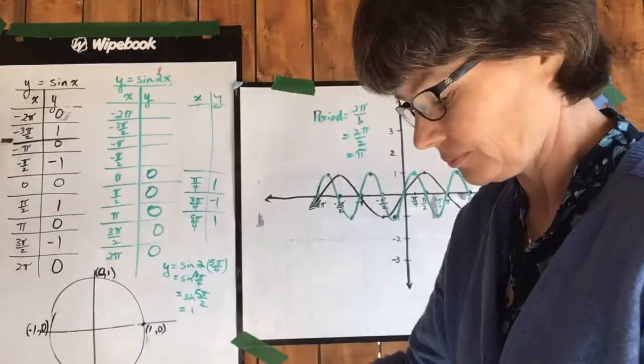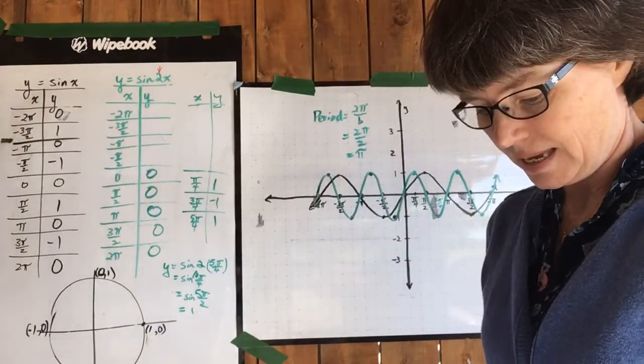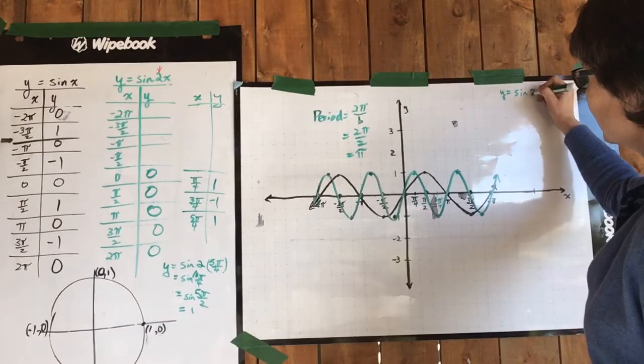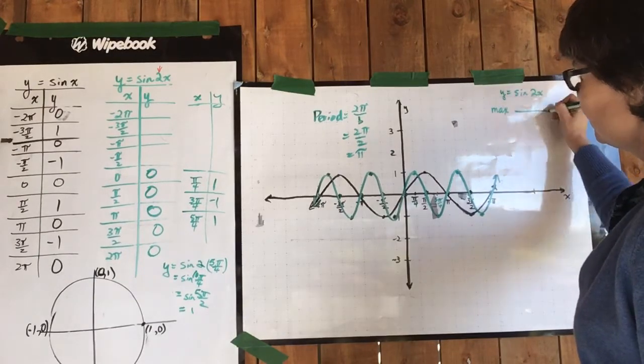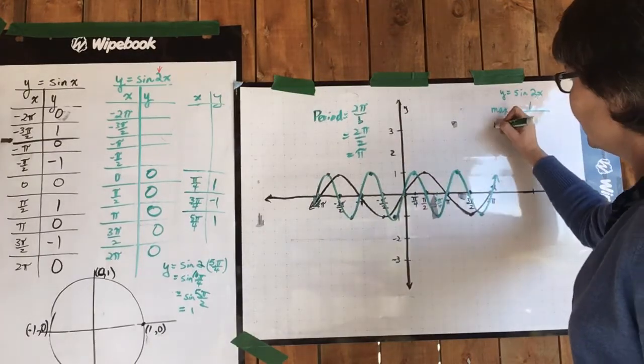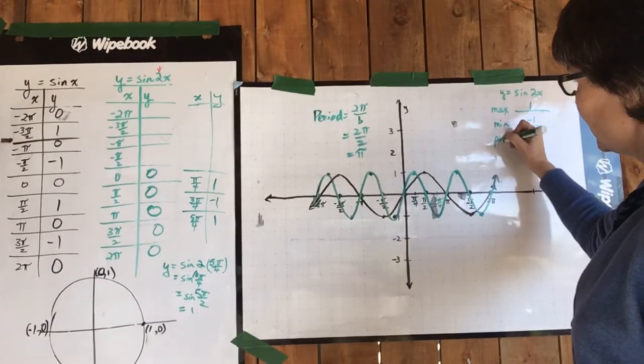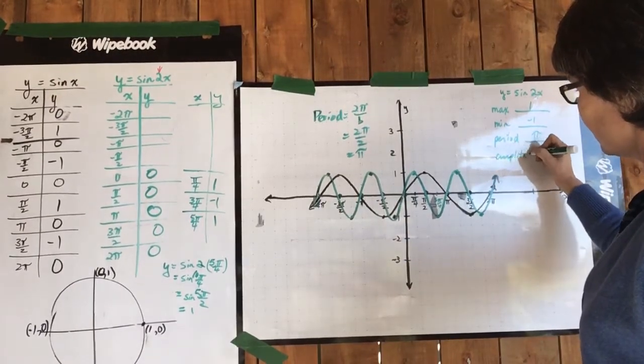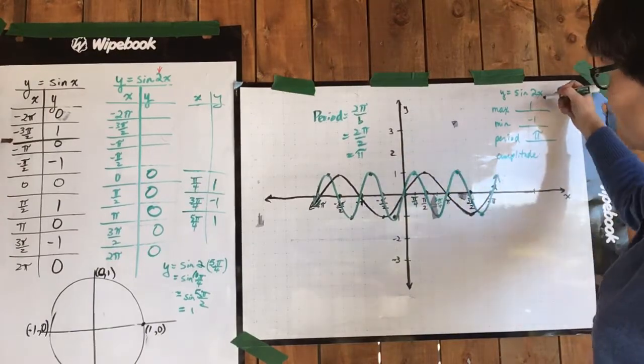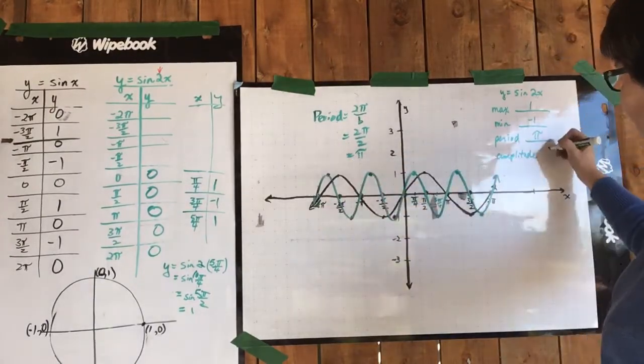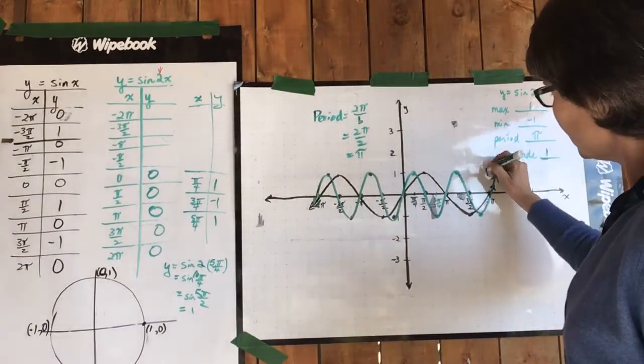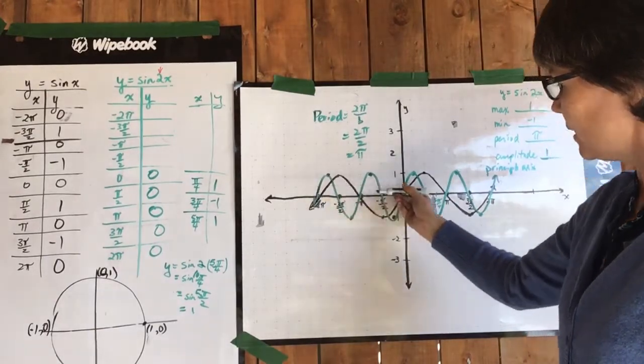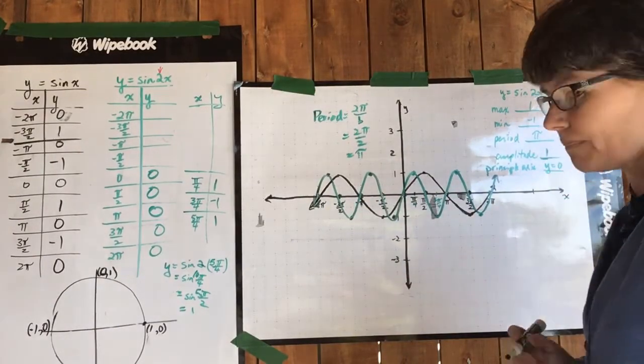What else do we need to say here? So you'll have to fill in the rest of that. We need to do maximum, minimum, period, amplitude, and principal axis again. So for y equals sine 2x: maximum is still one, same as our base graph. The minimum is still negative one. The period we just figured out is pi. The amplitude: did it change at all? Nope. Maximum and min are the same as the maximum min of the black graph. Therefore, amplitude stays the same at one. And the principal axis, did it change? That middle line that splits the graph between the top half and the bottom half stayed the same: y equals zero.